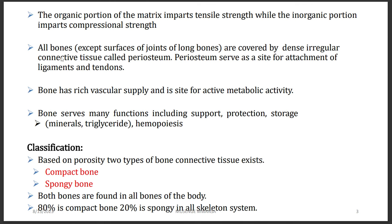All bones, except the surfaces of joints of long bones, are covered by a dense irregular connective tissue known as the periosteum. You may have heard of perichondrium and pericardium — this is similar, being the outer layer of connective tissue.